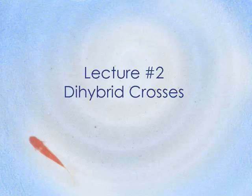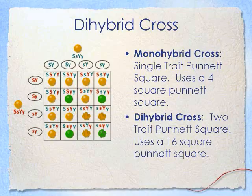In this lecture we're going to be looking at dihybrid crosses. We are going to be looking at two traits that are independently assorted in both their mother and their father, and what gets passed on to the offspring. In monohybrid crosses we only looked at one trait. Here's an example of what a Punnett square looks like for a dihybrid cross. Notice how it has 16 squares compared to the four that you use in a monohybrid.